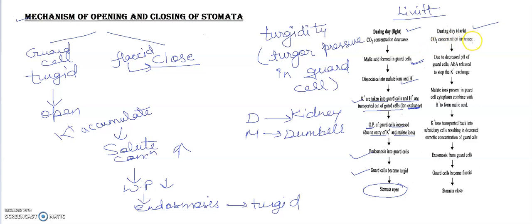During night, CO2 concentration it will get increased. And when it will get increased, there will be loss of the potassium ions. You can see here, potassium ion transported back into the subsidiary cell resulting in decrease. Osmotic concentration will get decreased and here water potential, you can write here water potential, it will get increased.